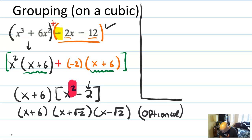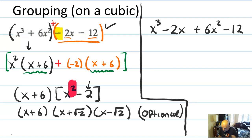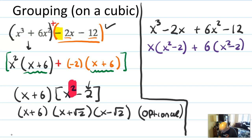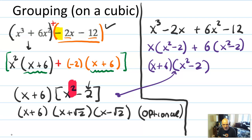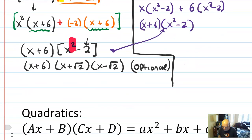One more sidebar: you can actually switch the order. If you didn't want to deal with that negative 2, you could flip-flop the negative 2 and the 6X squared, and it would still group out the same way. You'd get X times X squared minus 2, plus 6 times X squared minus 2, and you'd factor into X plus 6 times X squared minus 2 — same as before. That's a really nice way to check your answer. I actually did this problem five minutes ago, got different answers each way, knew I'd made a mistake, and was able to find and fix it. Switching the order should work for anything that factors by grouping.